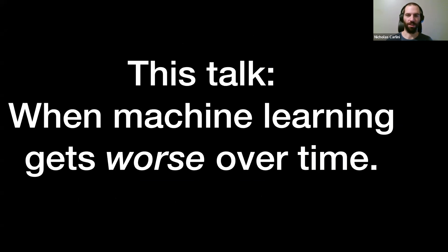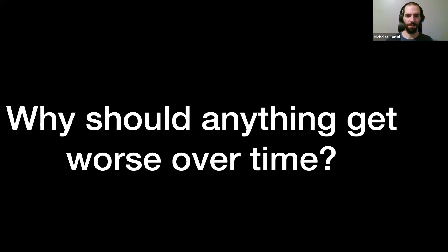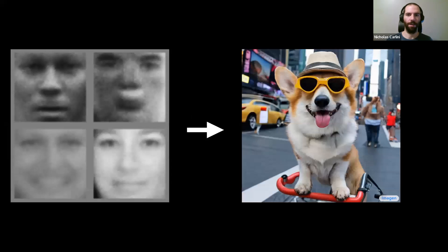This is what we're used to in machine learning: things are very bad just a couple of years ago, and then they get really good. What I want to do in this talk is discuss one particular setting where machine learning models get quite a bit worse over time, as opposed to getting better. You might ask why anything should get worse, since this trajectory of improvement is what we're used to.